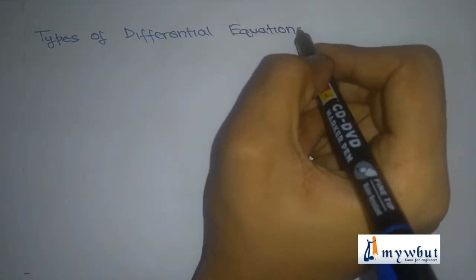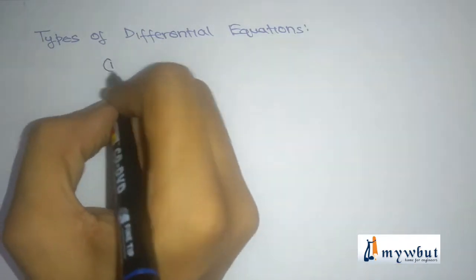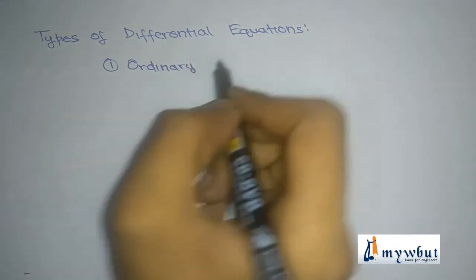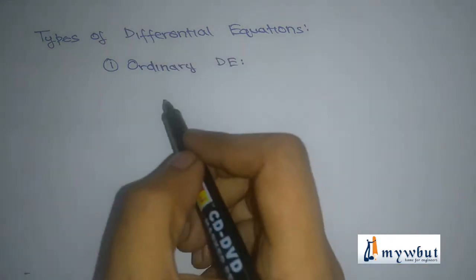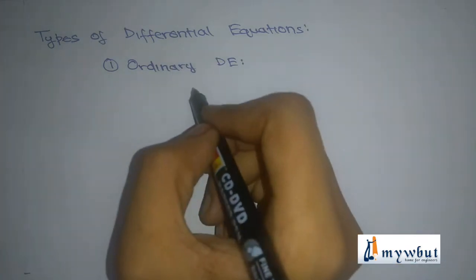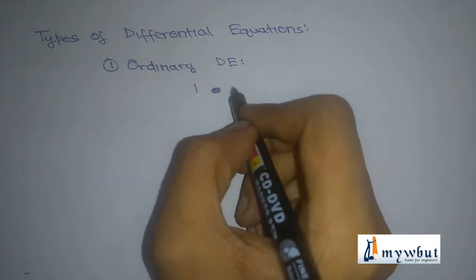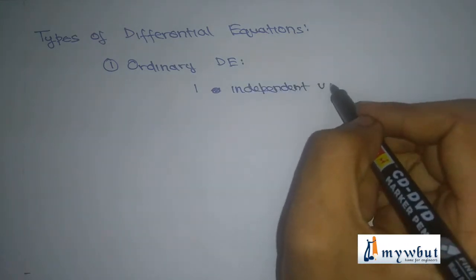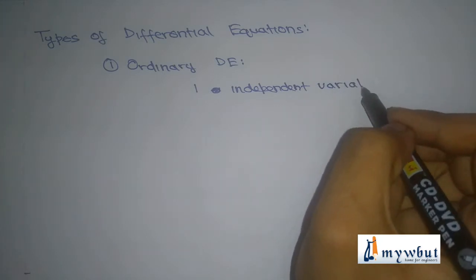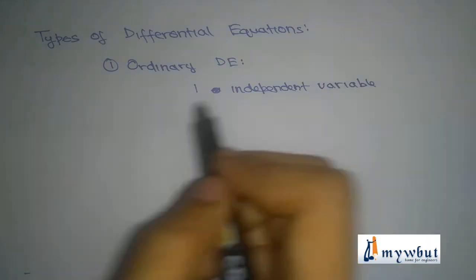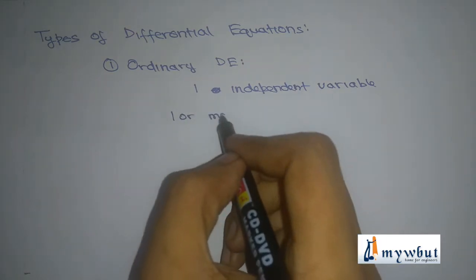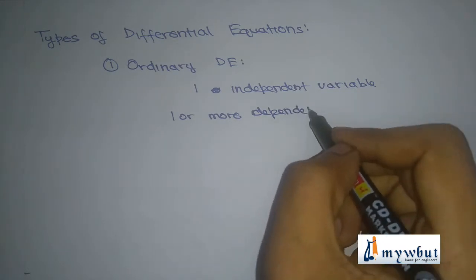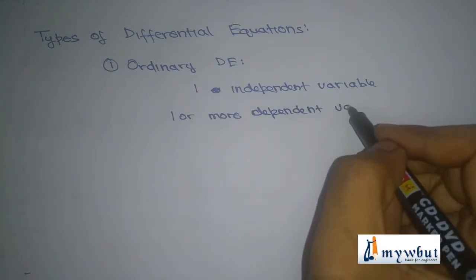There are basically two types of differential equations. The first one is the ordinary differential equation. In an ordinary differential equation, we have one independent variable — independent variables are those whose values do not depend on any other variables in the function — and one or more dependent variables, that is, variables that depend on the values of the independent variables.